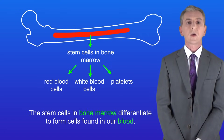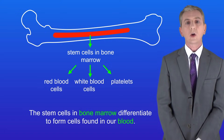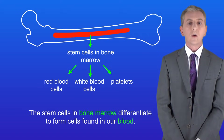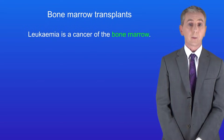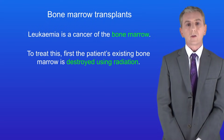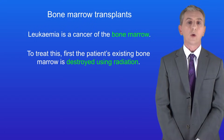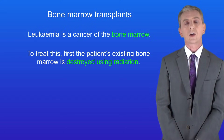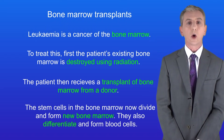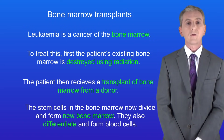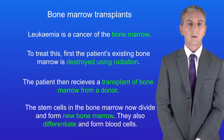Stem cells are very useful in medicine. The first example is a bone marrow transplant. Some people develop leukaemia, which is a cancer of the bone marrow. To treat this, the patient's existing bone marrow is first destroyed using radiation. The patient then receives a transplant of bone marrow from a donor. The stem cells in the donated bone marrow divide and form new bone marrow, and also differentiate to form blood cells.